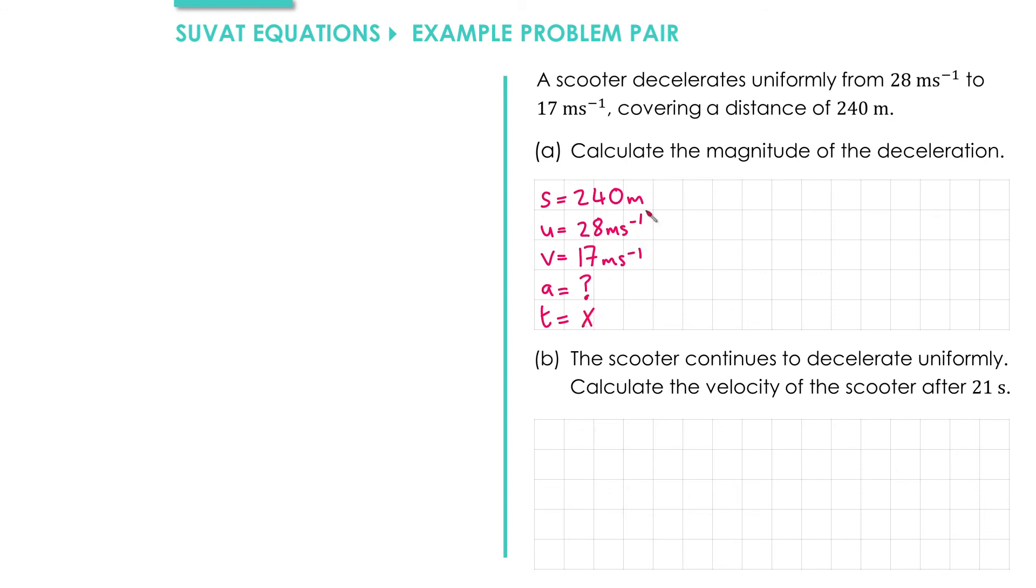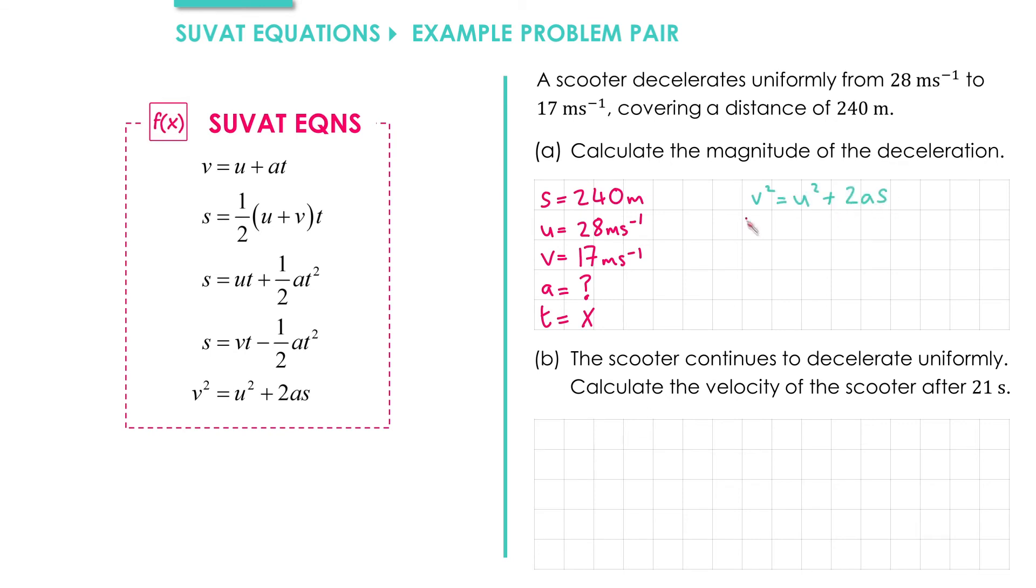Let's look for a SUVAT equation that contains S, U, V, and A. In this case, we want V squared equals U squared plus 2AS. So V squared, which is 17 squared, equals U squared, which is 28 squared, plus 2 times A times S, which is 240.